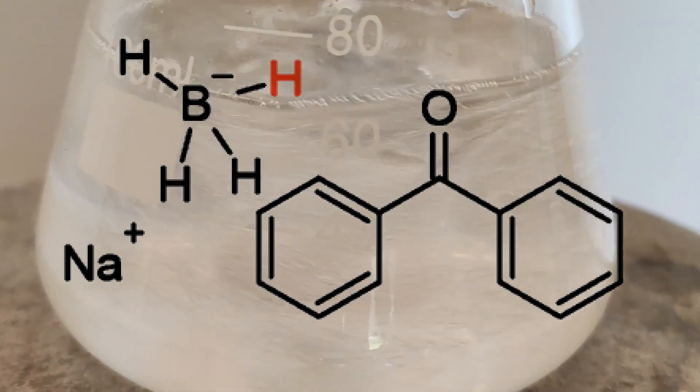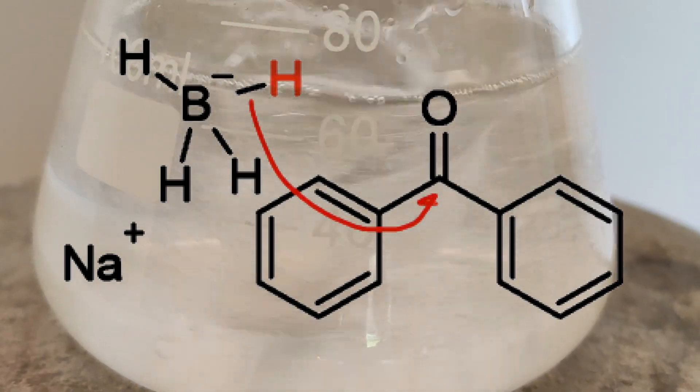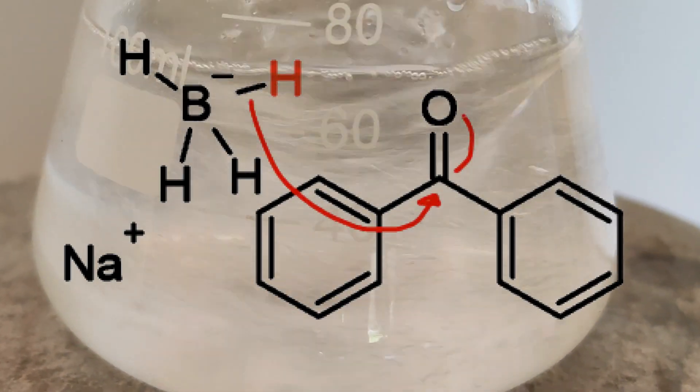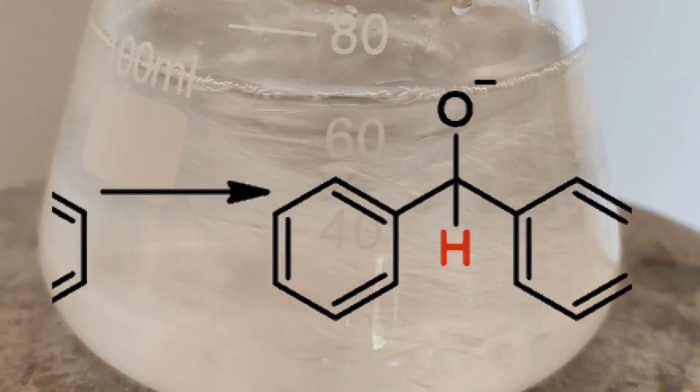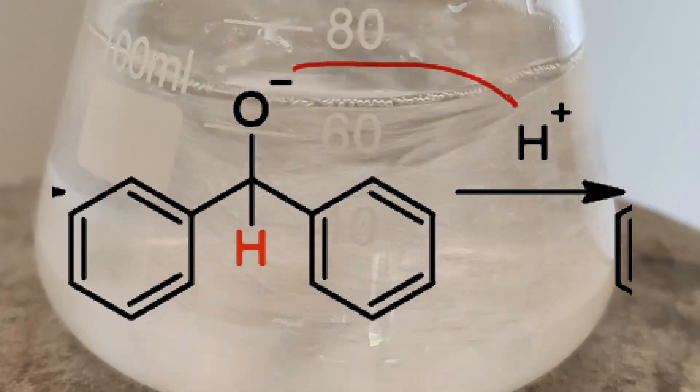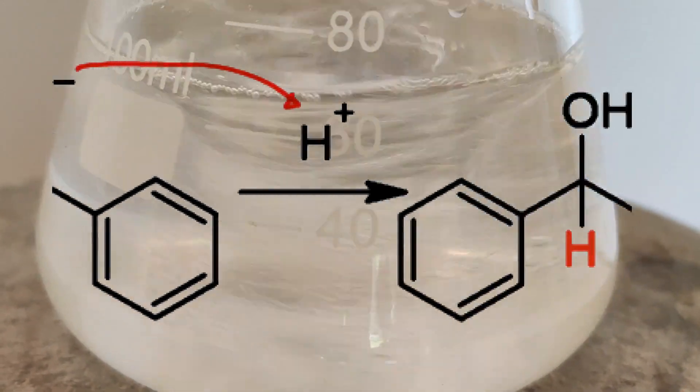This reaction is a simple carbonyl reduction. The hydride of the borohydride anion adds to the carbonyl carbon of the benzophenone, forming an alkoxide that is then protonated to yield our final product, diphenyl methanol, also known as benzhydrol.